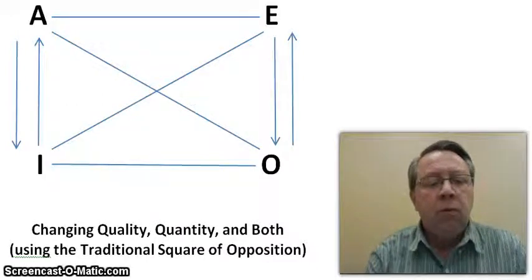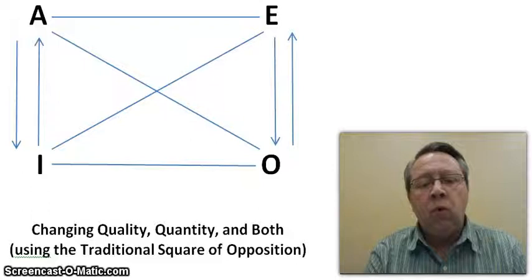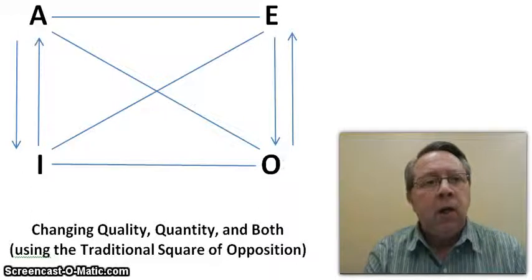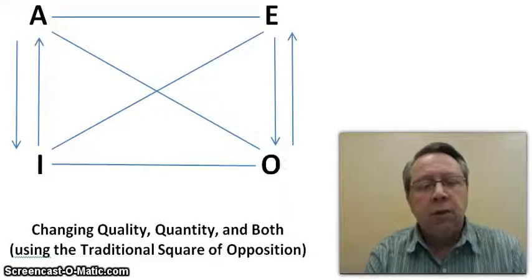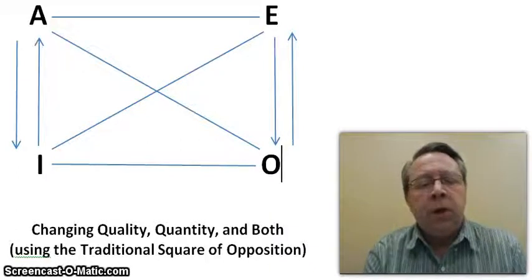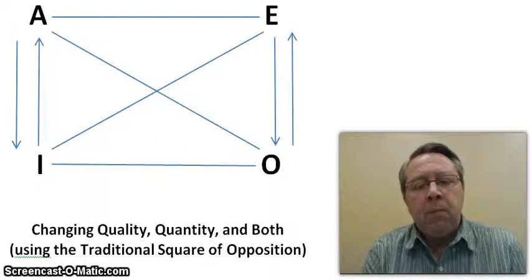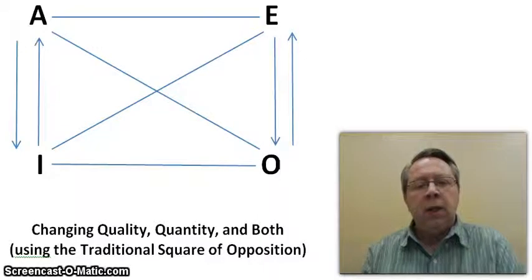This is for section 4.2, when dealing with the changing of quality, quantity, and/or both of given propositions. We have proposition A: all A are B. Proposition E: no A are B. Proposition I: some A are B. Proposition O: some A are not B.